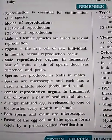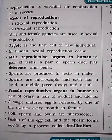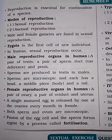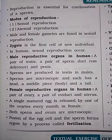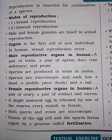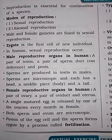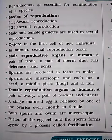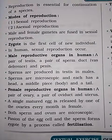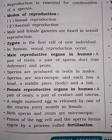In humans, sexual reproduction occurs. Male reproductive organs in humans are: a pair of testes, a pair of sperm ducts, and penis. Sperms are produced in testes in males. Sperms are microscopic and each has a head, middle piece, and a tail.